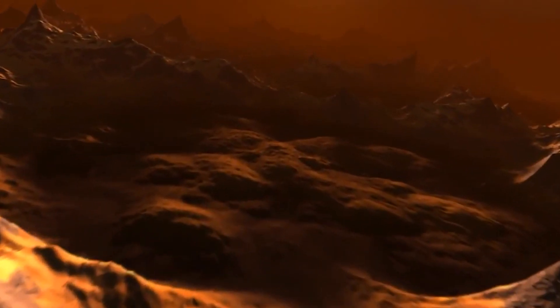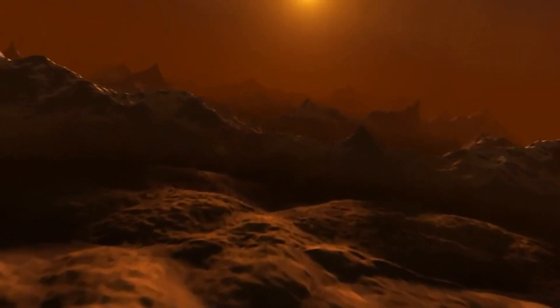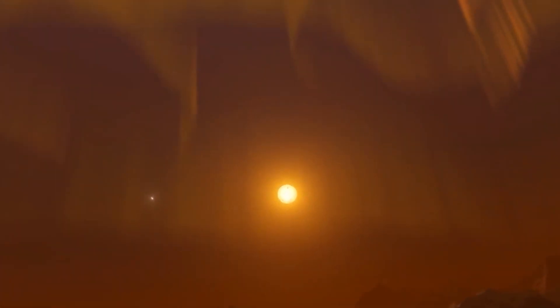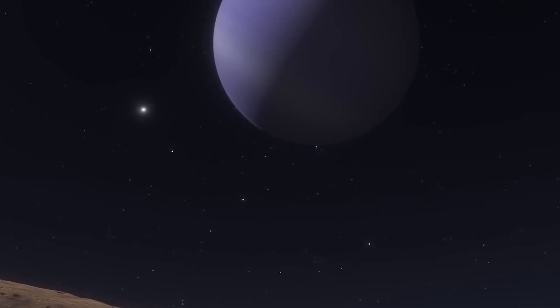The image revealed a rocky, barren surface with several large craters and a few small hills and valleys. The surface temperature was found to be around negative 40 degrees Celsius, which is colder than Earth's average temperature but still within the range of temperatures that could support life.